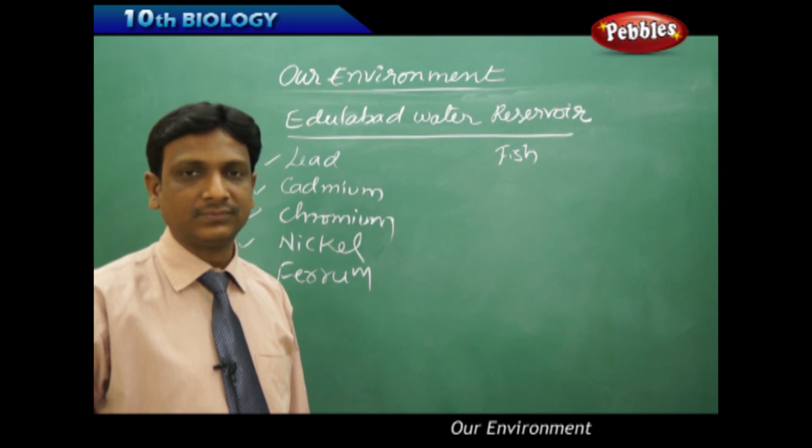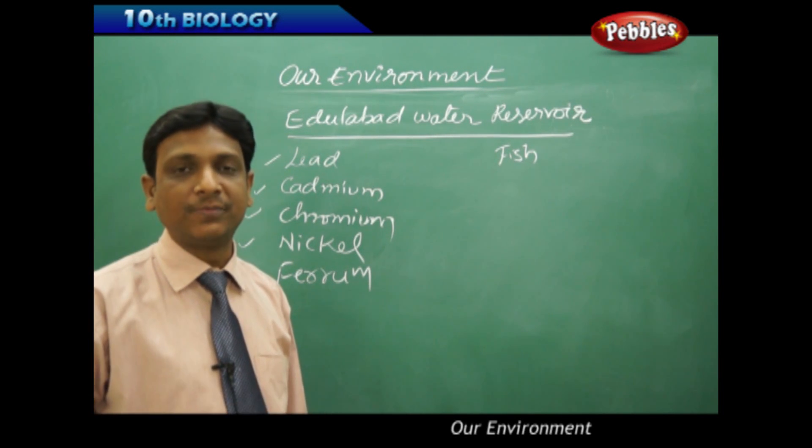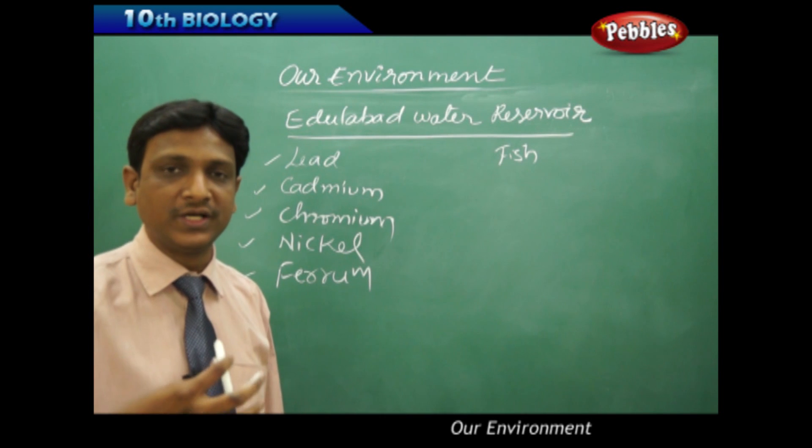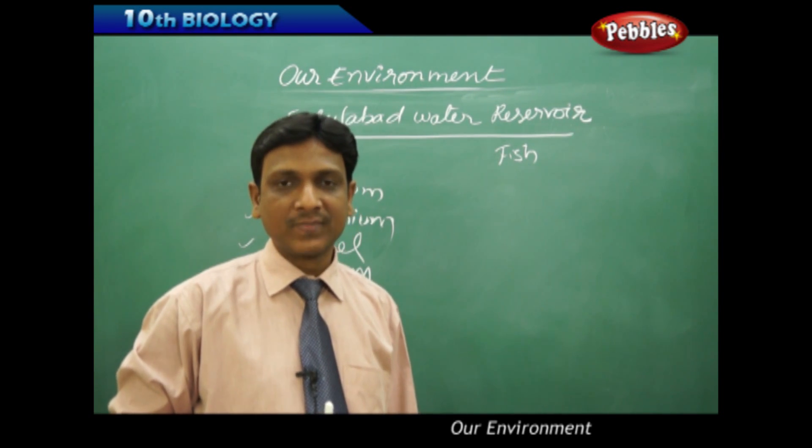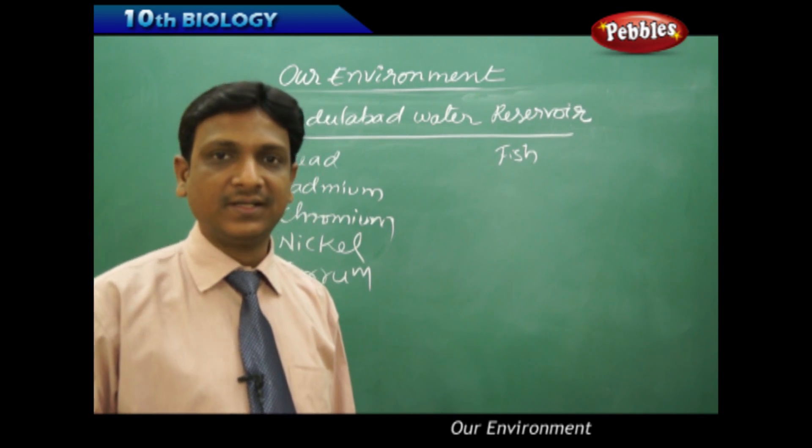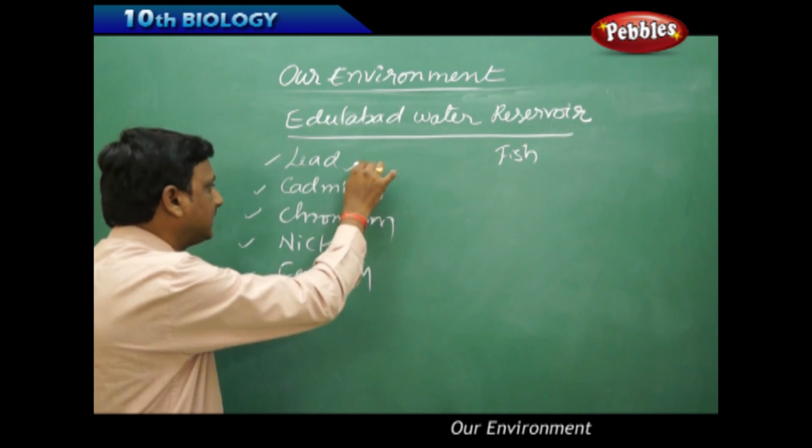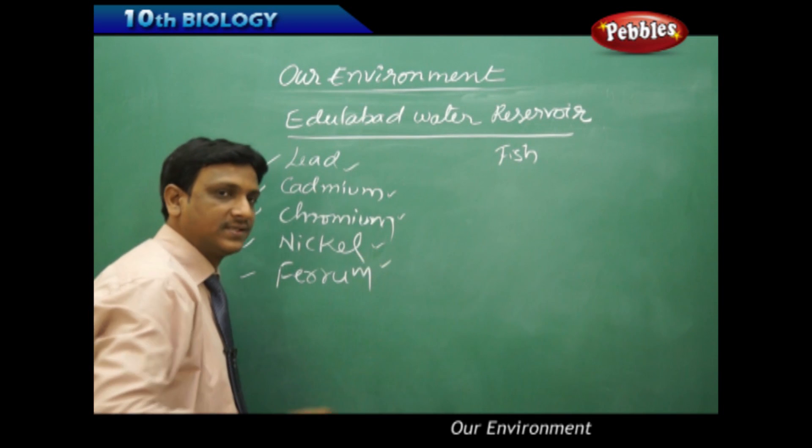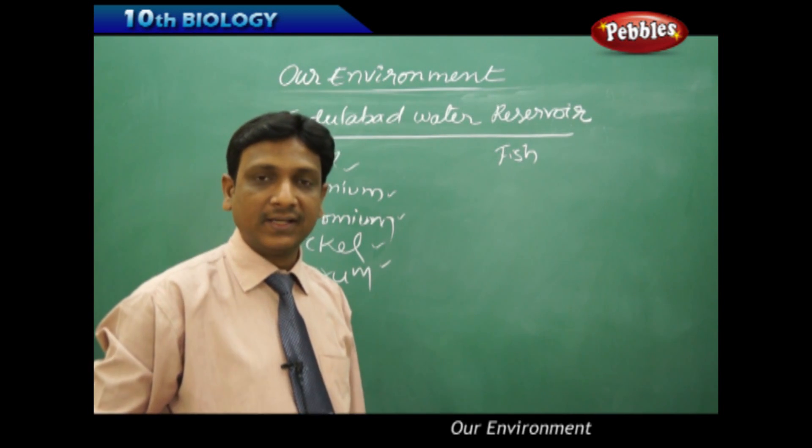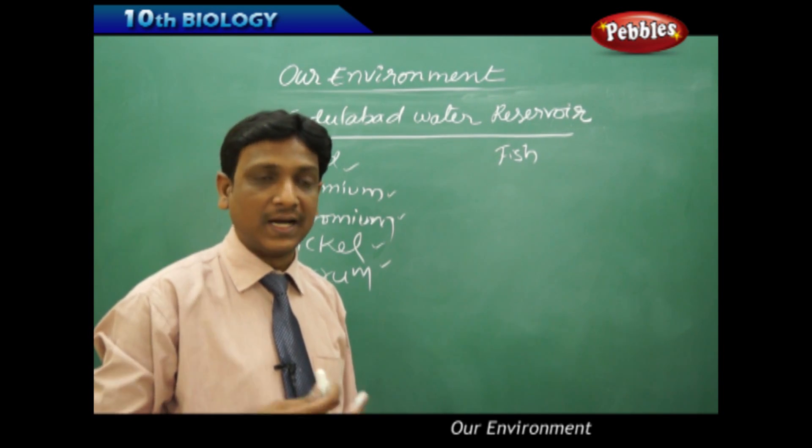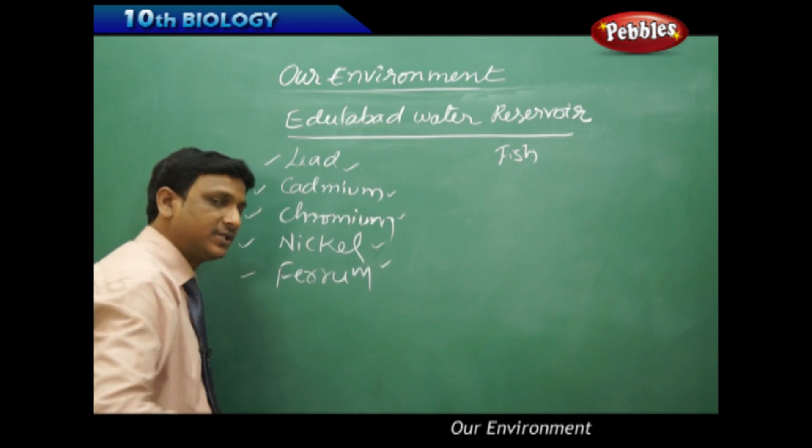The common scale carp, which is used as a high proteinaceous food by common man, that fish is tested for the accumulation of these metals and poisonous substances. They studied the gills, kidneys and liver of this fish and how much percentage of these metals are accumulated.